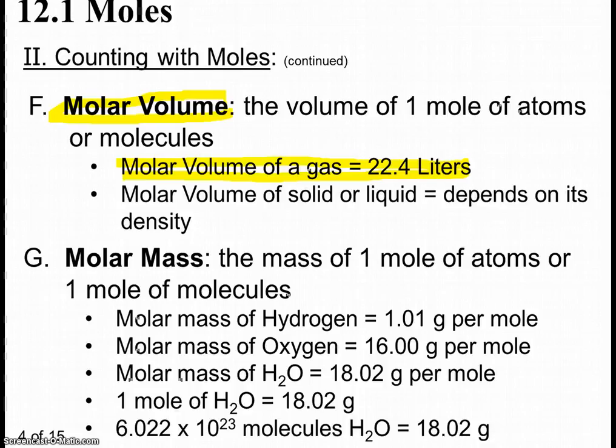If we wanted to find the number of items by using their mass, we would use the molar mass. Which is the mass of one mole of atoms or one mole of molecules. And this depends on the identity of the atoms or the molecules. For example, the molar mass of hydrogen is going to be 1.01 grams per mole. The molar mass of oxygen atoms is 16.00 grams per mole. Those numbers should look very familiar from the periodic table.